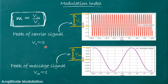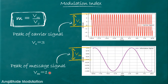Let us try to visualize the same. vc is the peak of the carrier signal. Let us consider this is a high frequency carrier signal having a peak of vc. From this figure, the peak is 3 volts, so vc = 3. Similarly, vm is the peak of the message signal. This is a low frequency information signal having a peak vm, and its value is right now 1 volt. So vm = 1.